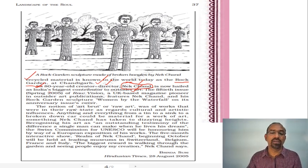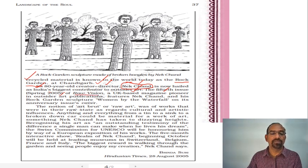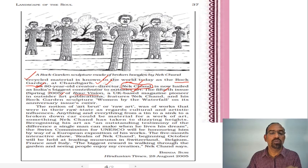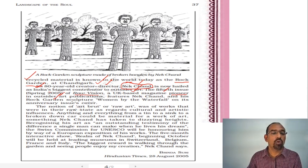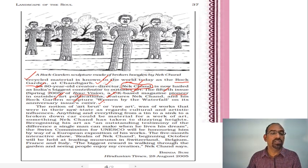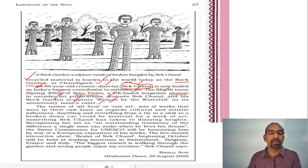Nek Chand is the biggest contributor to outsider art not only in India but all over the world. The 15th issue, spring 2005, of Raw Vision — a UK-based magazine and pioneer in outsider art — featured Nek Chand and his Rock Garden sculpture. The magazine's front page carried the sculpture of women by the waterfall from the Rock Garden, which became the cover page of the anniversary issue.